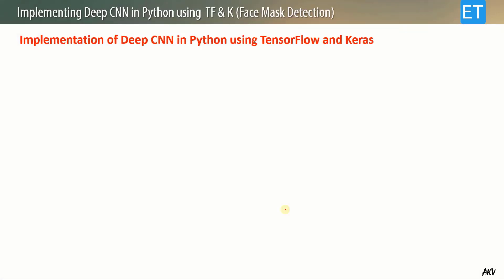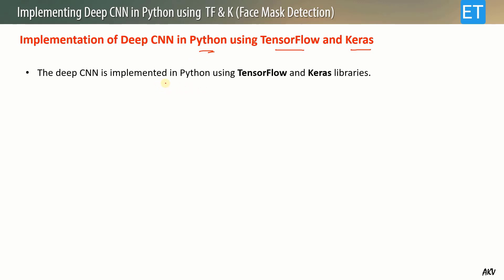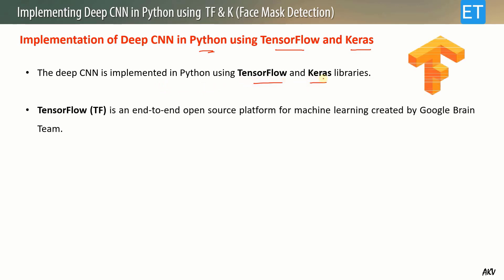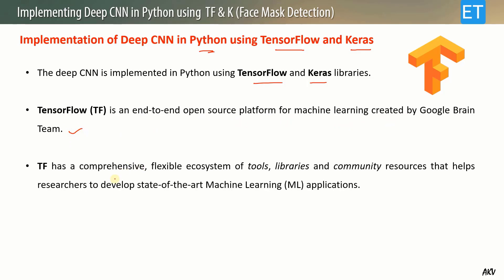Now let us see what TensorFlow and Keras are and how we can implement them in Python. The deep CNN is implemented in Python using TensorFlow and Keras libraries. TensorFlow is an end-to-end open-source platform for machine learning created by the Google Brain team. It has a comprehensive, flexible ecosystem of tools, libraries, and community resources that helps researchers develop state-of-the-art machine learning applications.